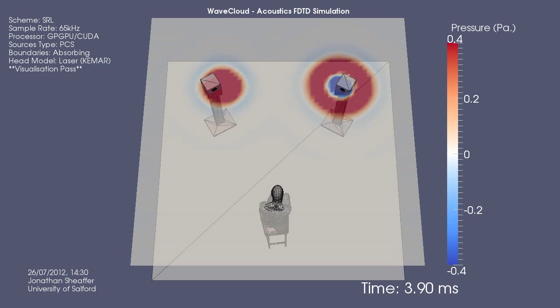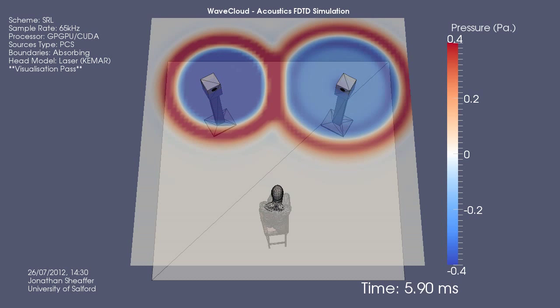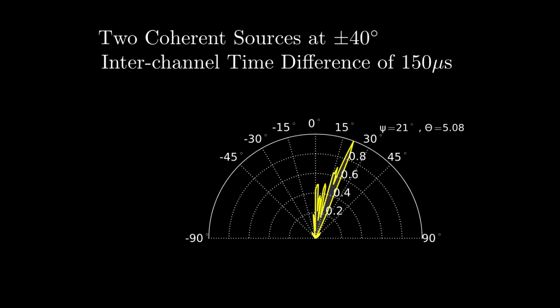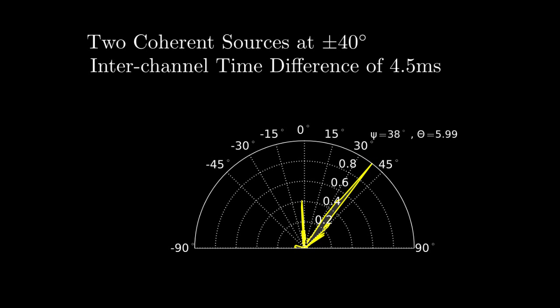If a small time delay is presented, the model responds that the auditory event is shifted towards the location of the early, or leading source. Increasing the time delay causes a precedence mechanism to be triggered, and the model suppresses the effect of the secondary wavefront generated by the lagging source.